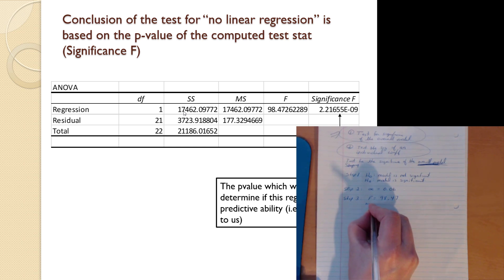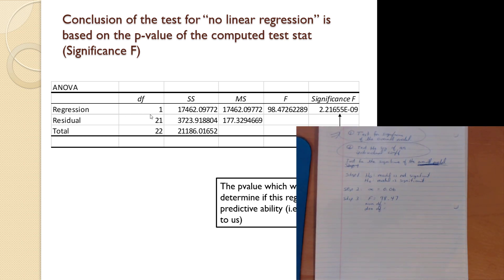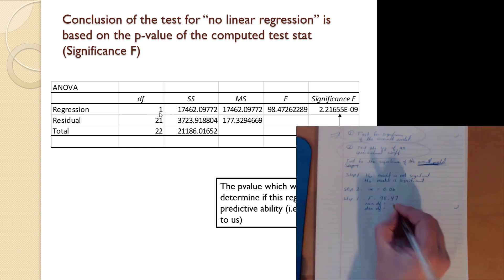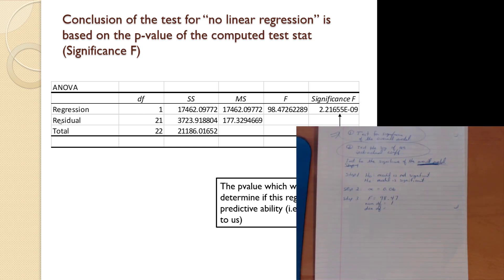I'm going to have a numerator degrees of freedom and a denominator degrees of freedom. My numerator degrees of freedom is the number of independent variables, which I see represented here under DF for degrees of freedom as 1. And for the residual — remember, residual and error are synonyms, different packages will call it error or residual — we see that there's 21 there.